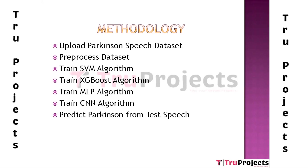The second module is preprocessing the dataset. Using this module, we replace missing values with the mean value, then normalize all extracted features using min-max scaling, and then split the data into training and test sets — 80% of data for training and 20% for testing.